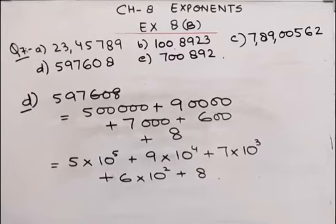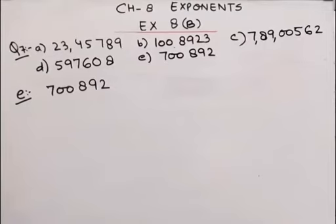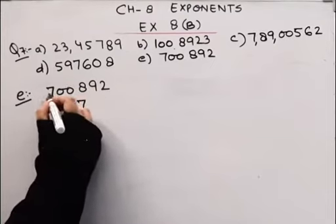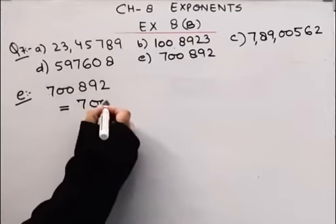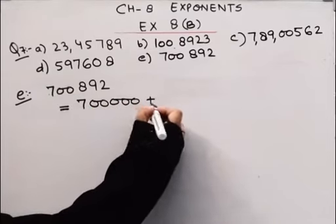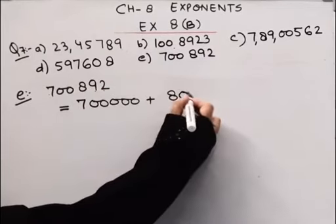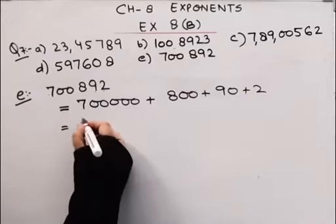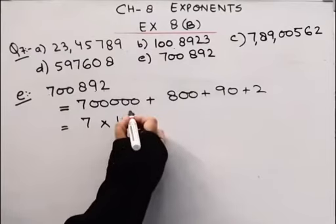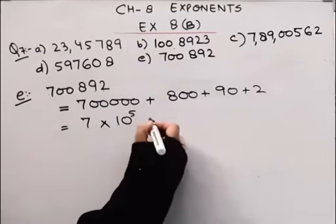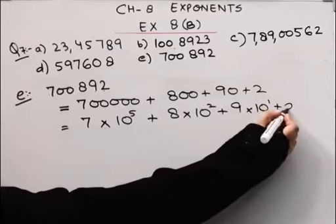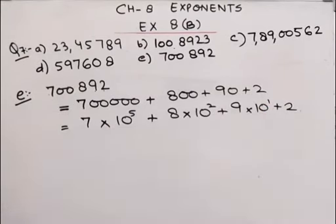Coming to the E part: 7,00,892. What will be its expanded form? How many digits after 7? 1, 2, 3, 4, 5. Plus 8 — how many digits after 8? 1, 2. So I put 2 zeros. Plus 90. Plus 2. This is the expanded form. This can be written as 7 into 10 to the power 5, plus 8 into 10 to the power 2, plus 9 into 10 to the power 1, plus 2. This is the answer for E part. Here we complete question number 7 and will move on to the last question of this exercise.